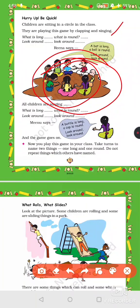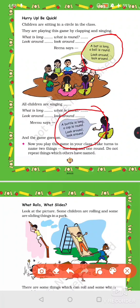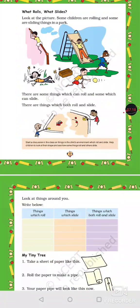Milu says: 'A bottle is long, a cap is round — look around, look around.' So you have got two rhymes: 'A bat is long, a ball is round, look around, look around' and 'A bottle is long, a cap is round, look around, look around.' Now our next topic is what rolls and what slides.